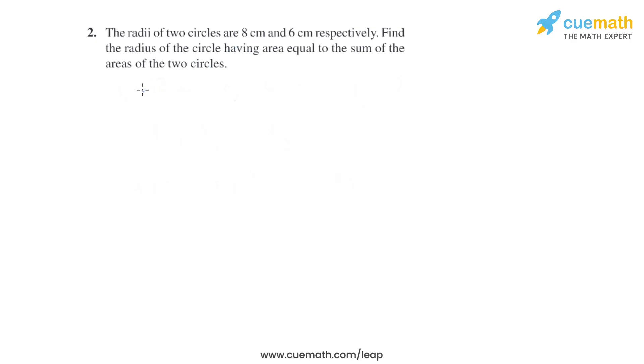Let's take r1 equals 8 centimeters, r2 equals 6 centimeters, and we have to find the third radius r3. Now let's take A1 as the area of the circle with radius r1, A2 as the area of the circle with radius r2, and A3 as the area of the circle with radius r3.